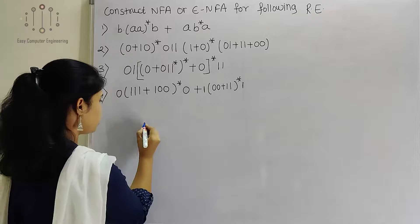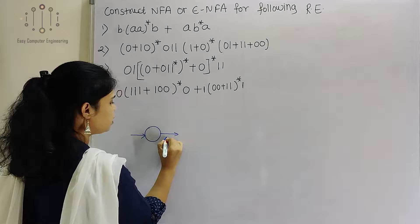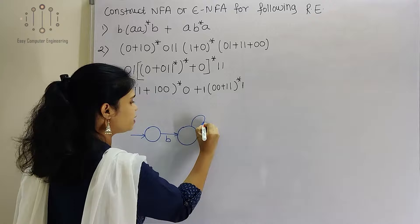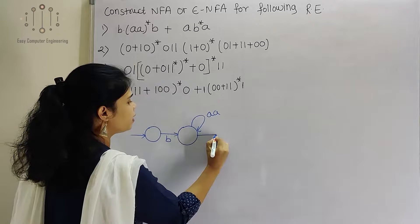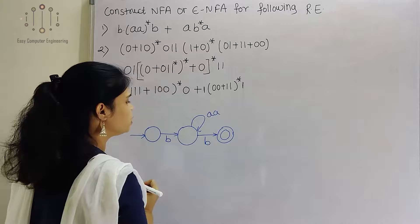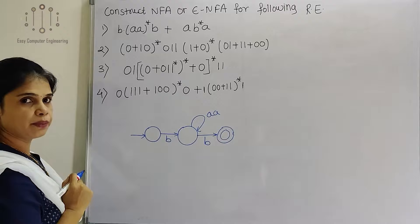So how can we show the first regular expression B·A*B? Here we will show B in concatenation with A·A*. So A·A* will be shown like this, and later on there will be B. So this will be my final step: B, A, A*, B.